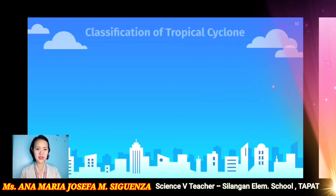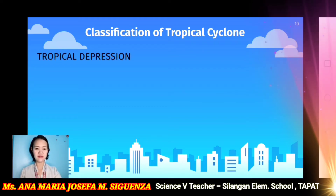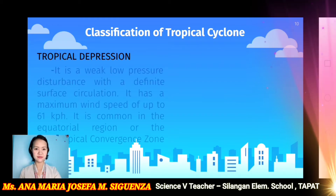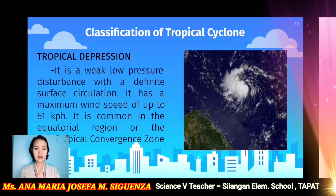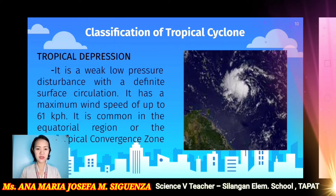These are the classifications of tropical cyclones. First, we have the tropical depression. It is a weak, low-pressure disturbance with a definite surface circulation. It has a maximum wind speed of up to 61 kilometers per hour, and it is common in the equatorial region, or the Intertropical Convergence Zone, or the ITCZ.